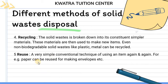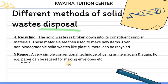The fifth method is reuse. It means that paper can be reused for making envelopes. So if you have written or drawn something on paper, you can convert it into envelopes. Basically, reuse is a method in which we can give many things a second life.